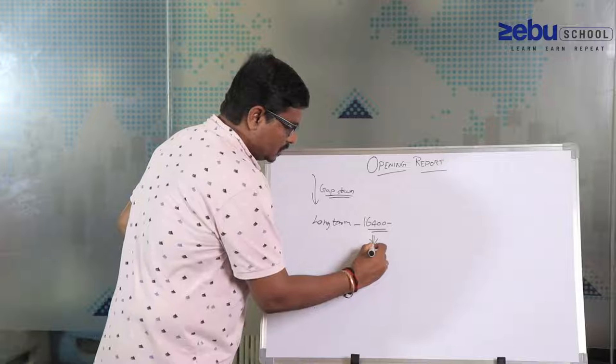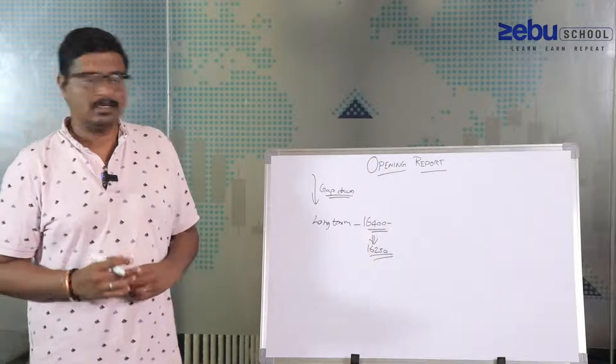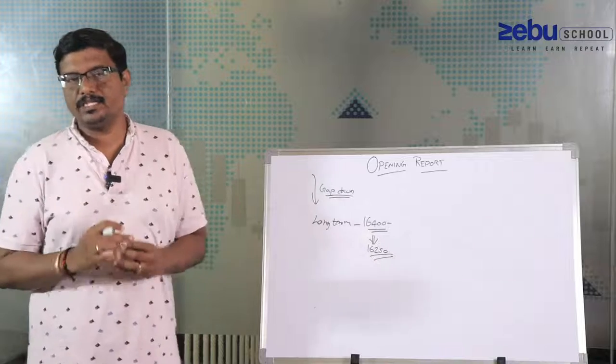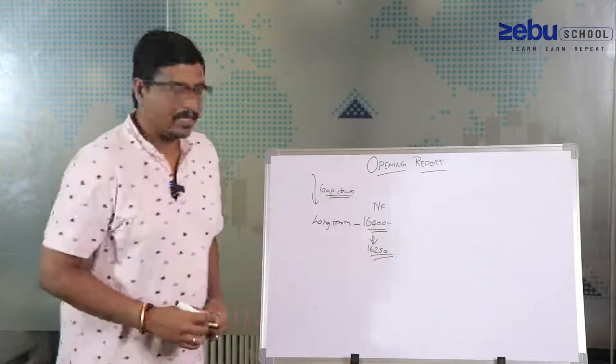And below this, I think 16,250 is the exact support what I am expecting. Maybe the cushion for the further bearishness is only till this level in terms of Nifty, whereas for Bank Nifty again.